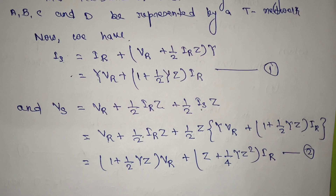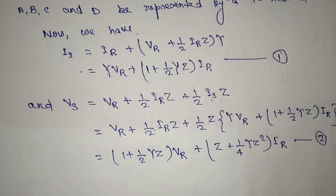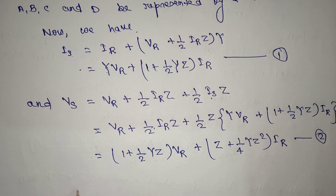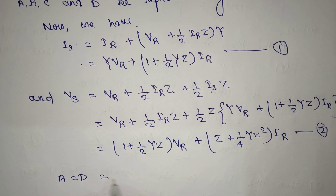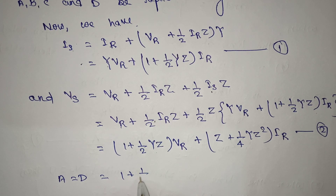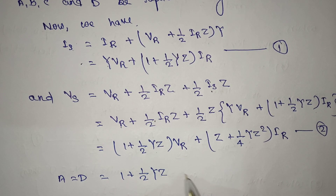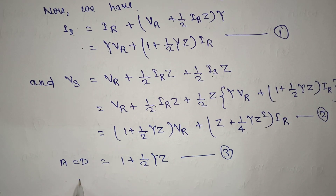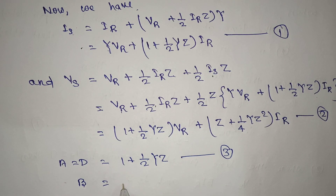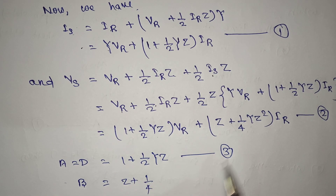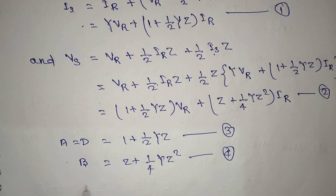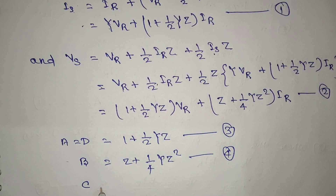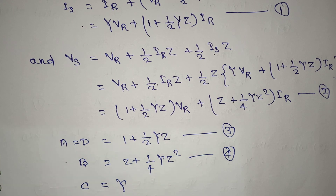After rearranging, comparing equation 1 and equation 2 with the general expressions for voltage and current of a transmission line, we get: A = D = 1 + (1/2)YZ — this is equation number 3; B = Z + (1/4)·Y·Z² — this is equation number 4; and C = Y — this is equation number 5.